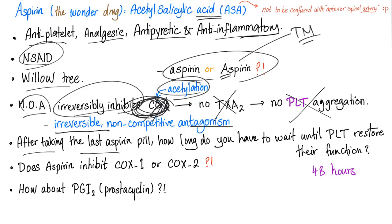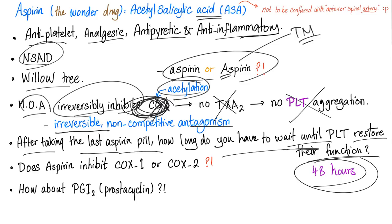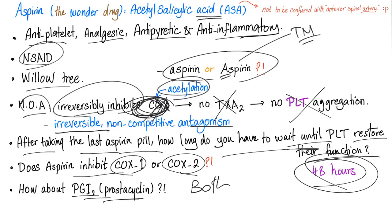After taking the last aspirin pill, how long do you have to wait until the platelets restore their function — primary hemostasis? 48 hours. Does aspirin inhibit cyclooxygenase 1 or cyclooxygenase 2? The answer is both. How about prostaglandin I2 or prostacyclin? We have two theories. Number one, aspirin doesn't inhibit prostaglandin I2. Theory number two, aspirin in the beginning inhibits it, but at the end of the day, it doesn't.